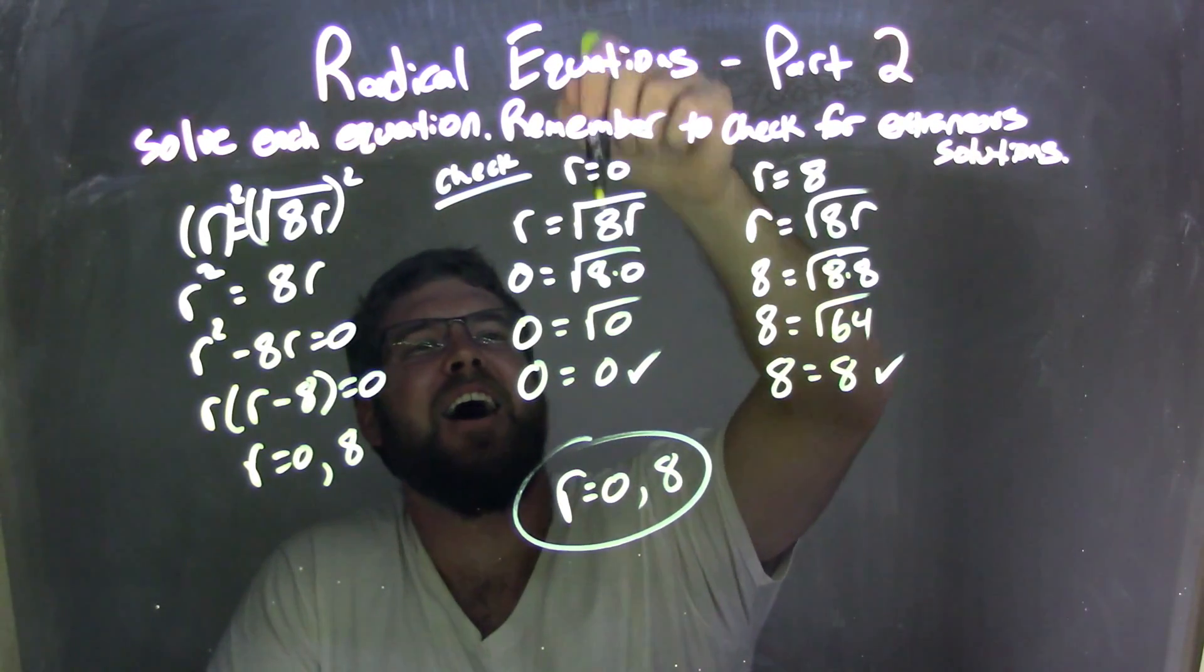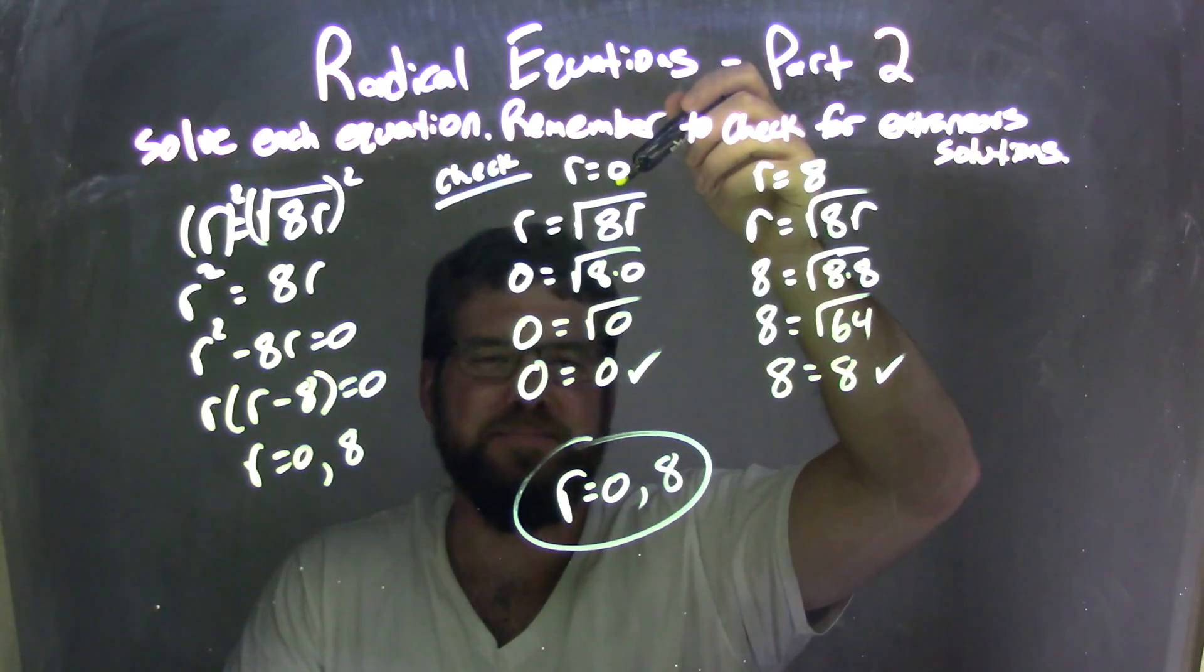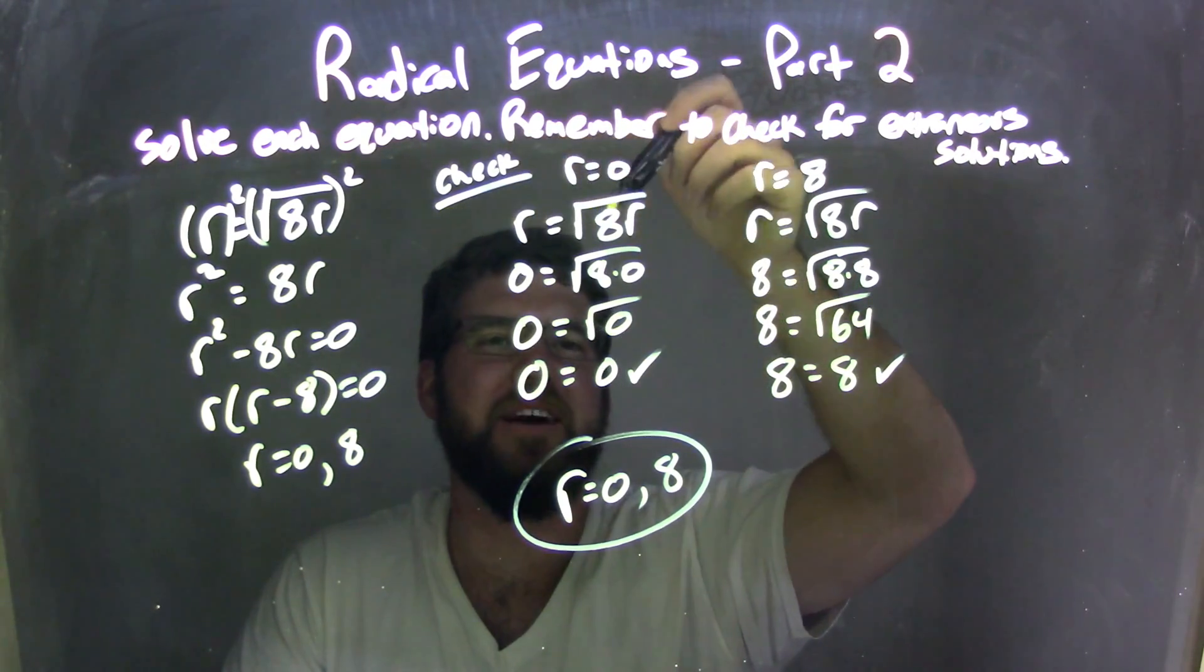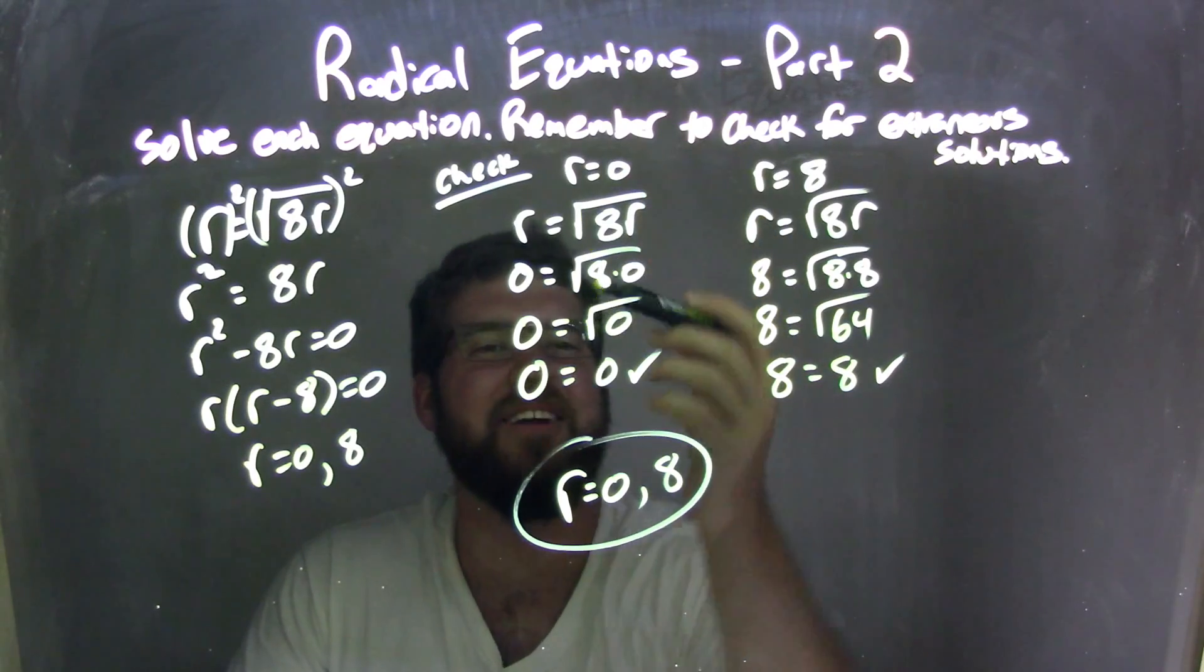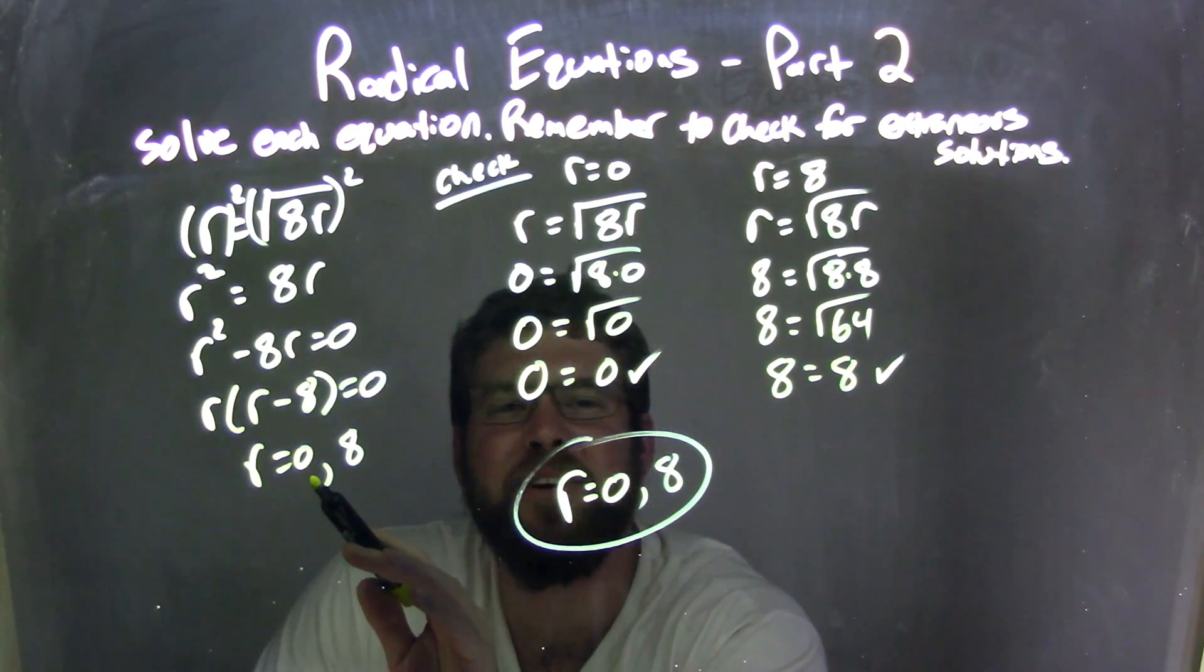Now I'm going to check it here. So I plug 0 in for r from my original equation and see if it was equal. Turns out it was, right? 0 equals 0. Fantastic. That means 0 is a true solution, looking good.